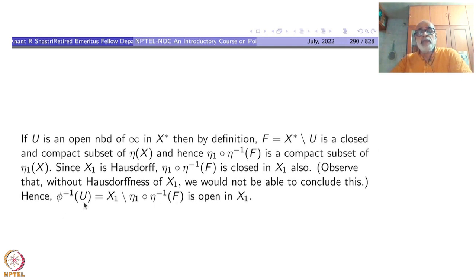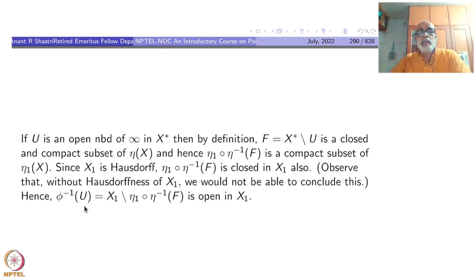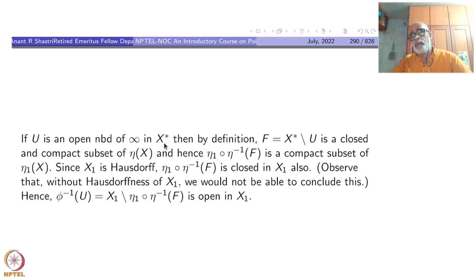Hence phi-inverse of U is nothing but X-1 minus eta-1 composite eta-inverse of F, which is an open subset since the latter is closed. So we have proved that the map phi is continuous at all points away from X — those all go to the point infinity in X-star. This completes the proof.